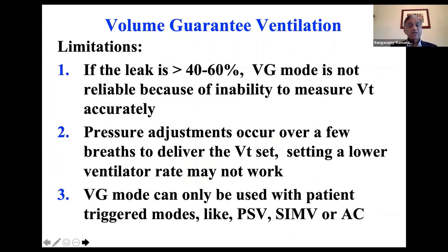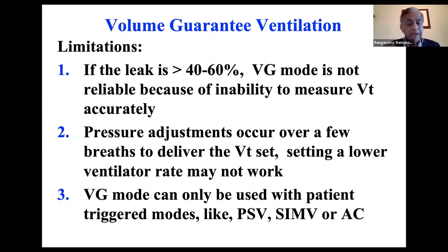Limitations: as I mentioned, if the leak is more than 40 or 60%, it's really not reliable because the ventilator has a hard time measuring the tidal volume. Pressure adjustments occur over a few breaths to deliver the set tidal volume. So if you set a lower rate on the ventilator, it may not work. Typically in volume guarantee mode, set your respiratory rate at 30 — not below that.